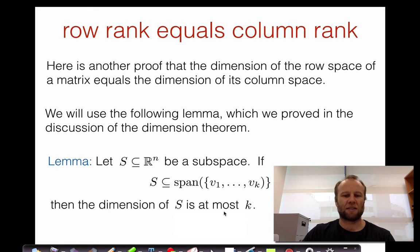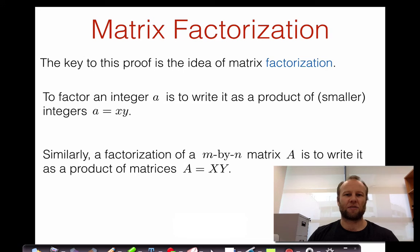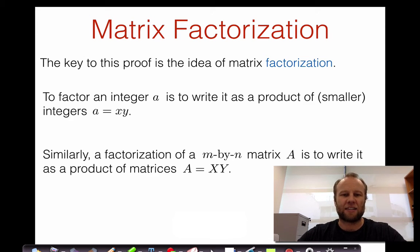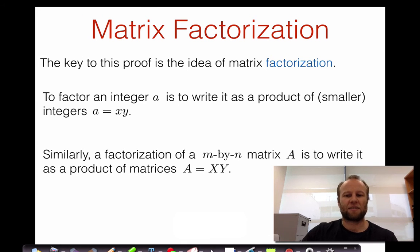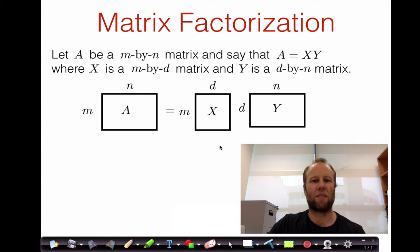We're going to use this lemma to help us prove that row rank is equal to column rank. This proof is going to exploit a connection between the rank of a matrix and the idea of a matrix factorization. To factor an integer A is to write it as a product of other integers, as A equals x times y. A matrix factorization is very similar — a factorization of a matrix A is simply to write A as a product of two other matrices.